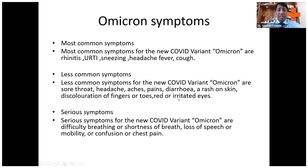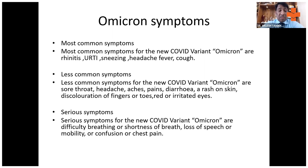The rash on the skin was seen with the Delta variant and other variants, but is not very peculiar to the Omicron variant. The serious symptoms are the same — shortness of breath, loss of speech, and confusion. Some patients also present with chest pain, and we have seen many cases coming with acute coronary syndrome alongside COVID-19 infection.